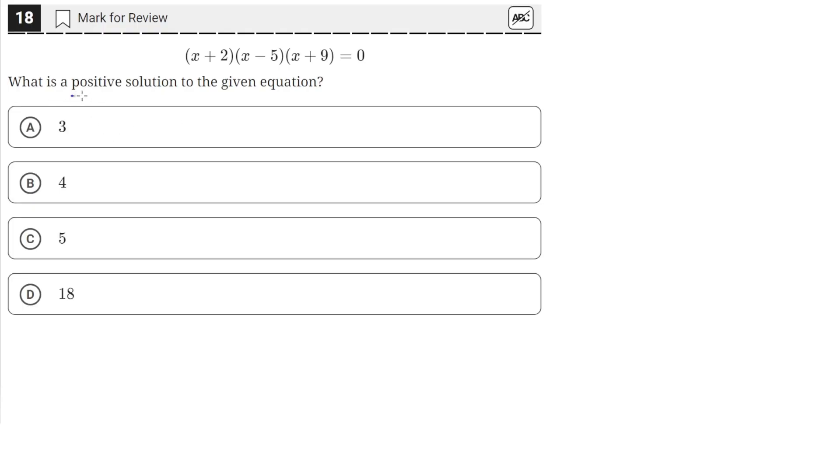What is a positive solution to the given equation? We're given this equation: x plus 2 times x minus 5 times x plus 9 equals 0. And we need to find a solution for x that satisfies this equation, which is positive.